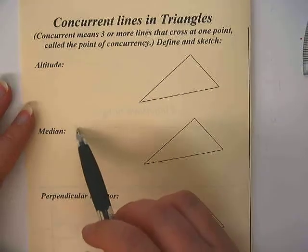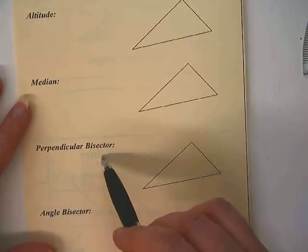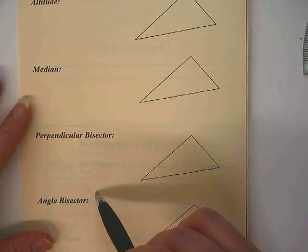There's the altitude, median, those are new ones that we haven't learned yet, perpendicular bisector, and angle bisector, which we have already learned.